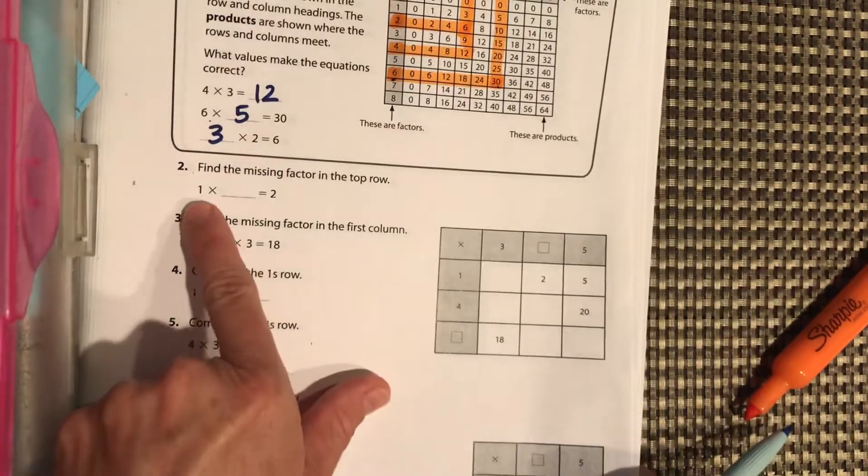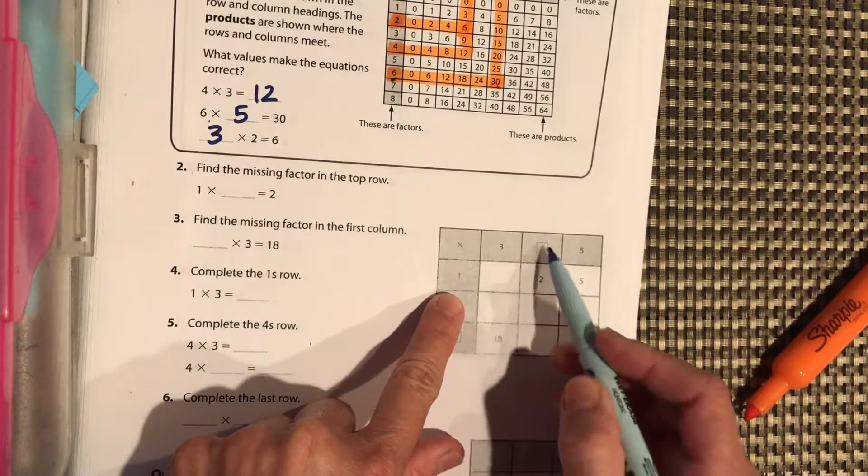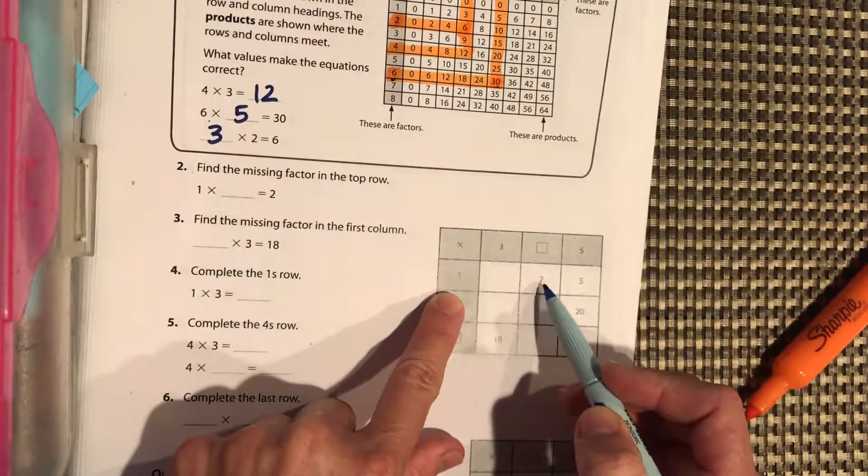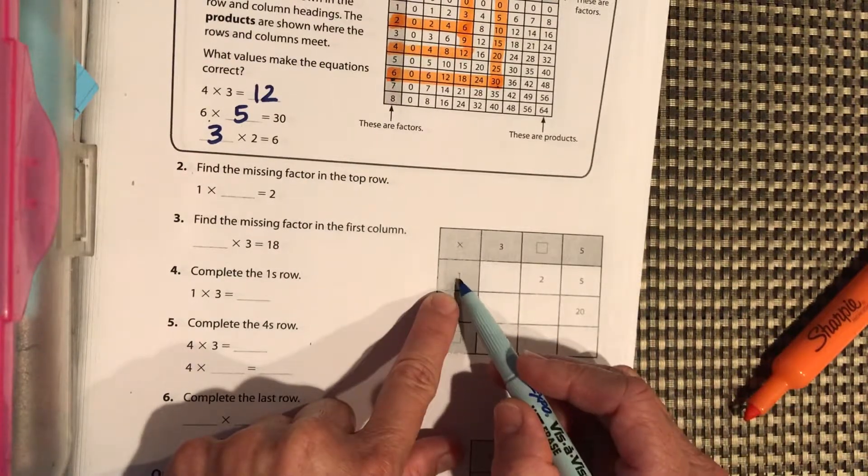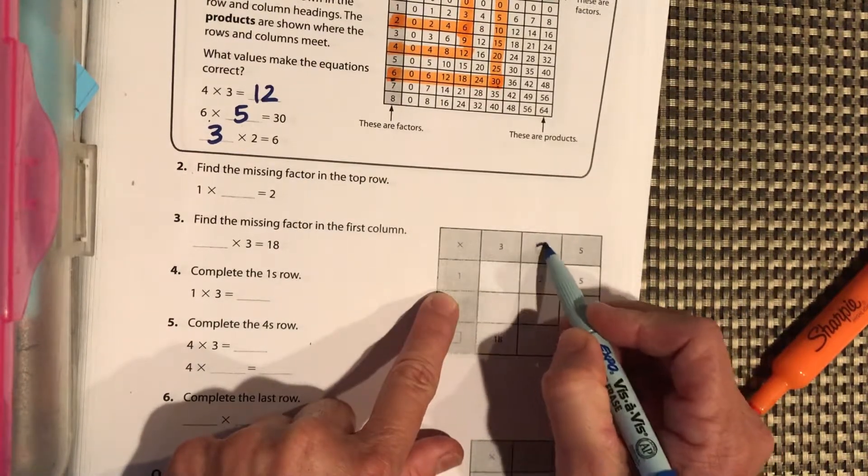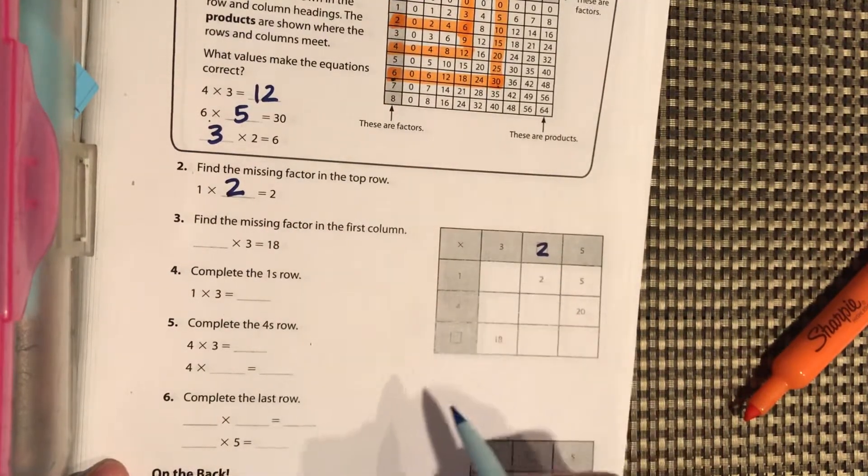So 1 times some number equals 2. We have to know our multiplication facts here for this one. So 1 times 2 is equal to 2. But again, remember these are completely out of order.